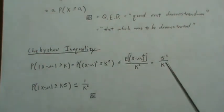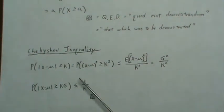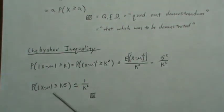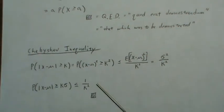So now if we change the K here to K times sigma, then this comes out as K squared sigma squared, which cancels with the numerator. But this is generally what you see as Chebyshev's inequality.